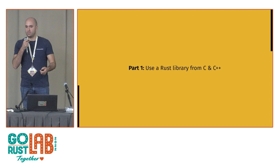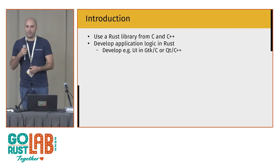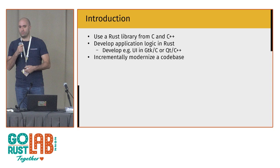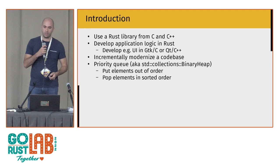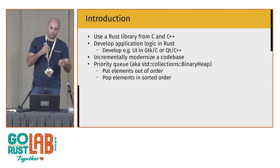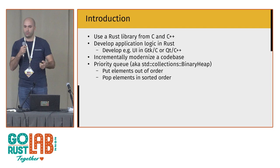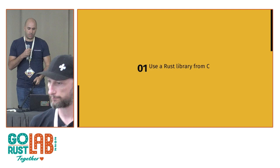I'll be talking about using a Rust library from C and C++. Why would you want to do that? Perhaps you're developing an application where you want the core logic in a performant, memory-safe language and want to build the UI in GTK with C, or Qt with C++. Or perhaps you have a legacy codebase in C or C++ and want to modernize it, maybe one module at a time. The use case I'll be using is a priority queue backed by Rust's standard library BinaryHeap. We push elements out of order and when we pop them out they come out in order. We'll be writing a foreign function interface around this priority queue implementation.